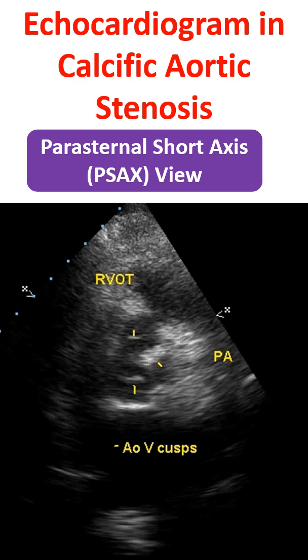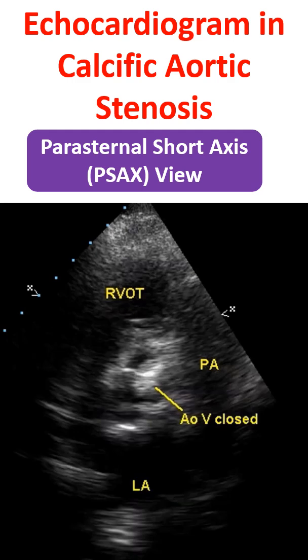RVOT: right ventricular outflow tract. PA: pulmonary artery. Parasternal short axis view at the level of the aortic valve showing the aortic valve in closed position with significant thickening and calcification. The valve appears tri-leaflet rather than bicuspid.